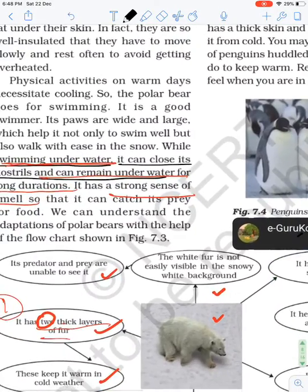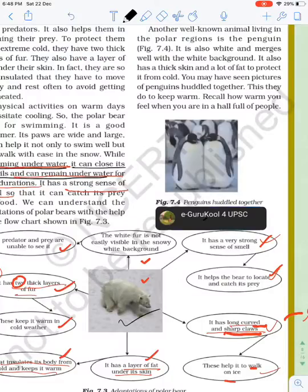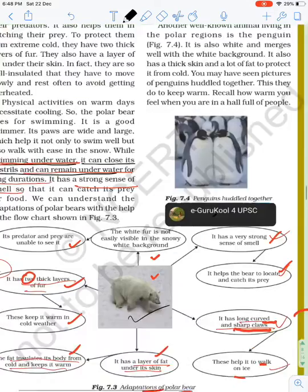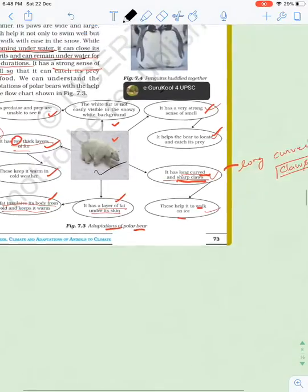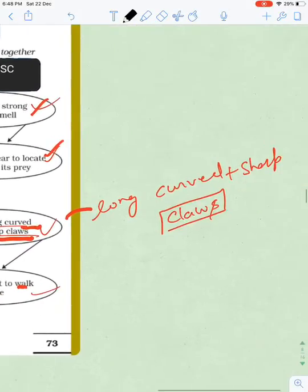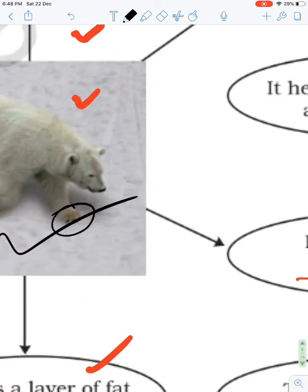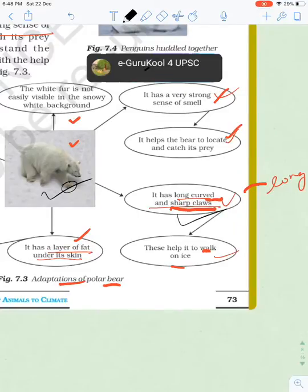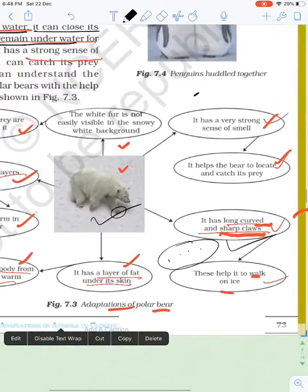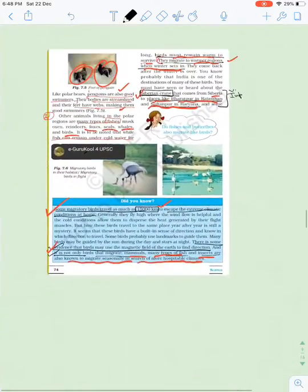Next is penguins. They have two thick layers of fur. Their hands have long and curved claws, as you can see. These help them walk on ice easily, otherwise they would slip. These claws help them walk on ice also.